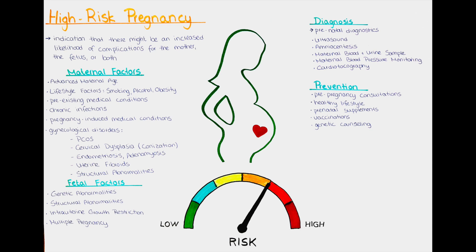We also usually classify a pregnancy as a high-risk pregnancy if the mother has a history of pregnancy complications with a previous pregnancy. This can for example include a previous preterm birth or recurrent miscarriages.